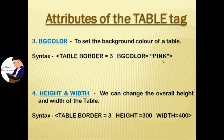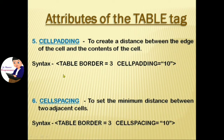Next: height and width — we can change the overall height and width of the table. For example: table border equal 3, then height equal 300, then width equal 400. Next: cellpadding — used to create a distance between the edge of the cell and the contents of the cell. Within double quotes, type any number.